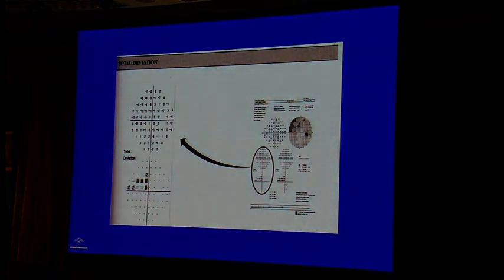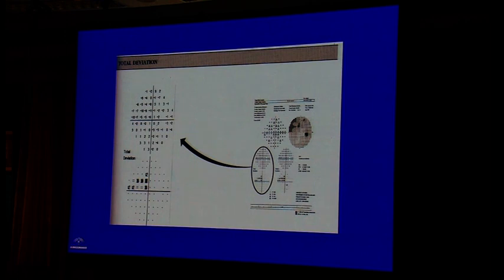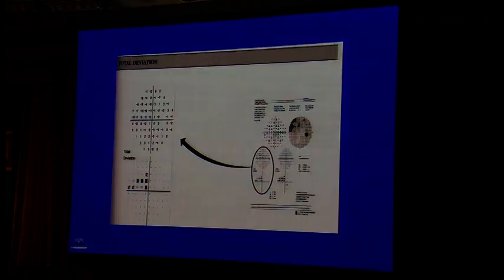The total deviation shows by how much the patient's retinal sensitivity differs from age-corrected normal values. The total deviation probability plot indicates how statistically significant those deviations are. Dark spots indicate abnormality — the more dark spots present in the total deviation plot, the more abnormal the visual field — and the pattern of damage can be appreciated from this plot.